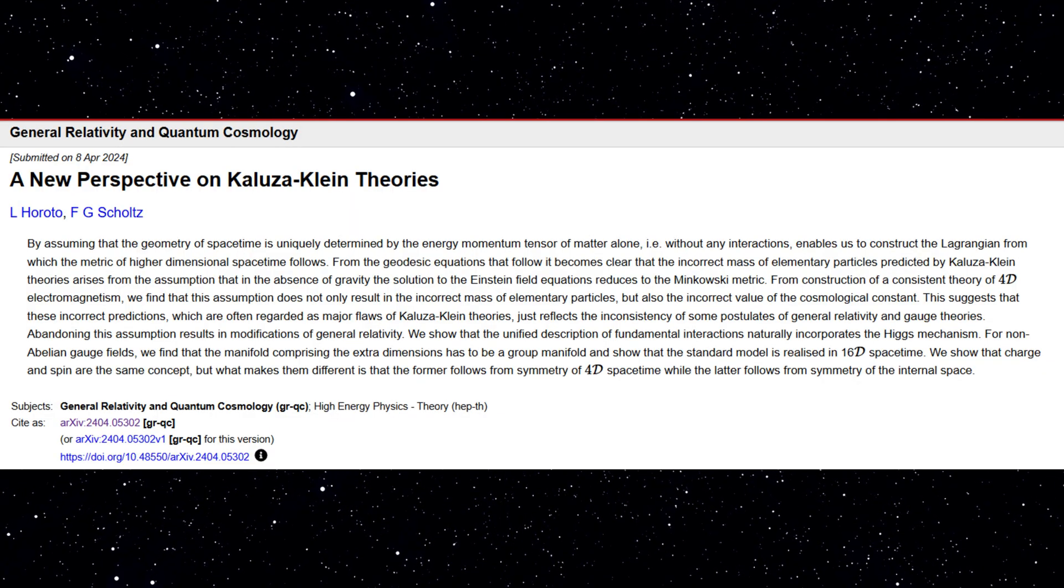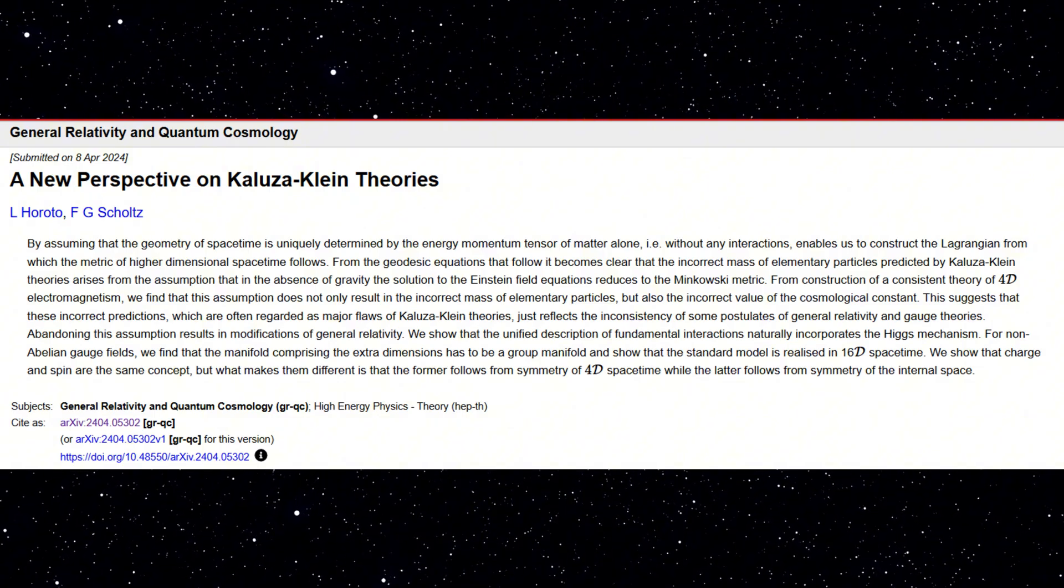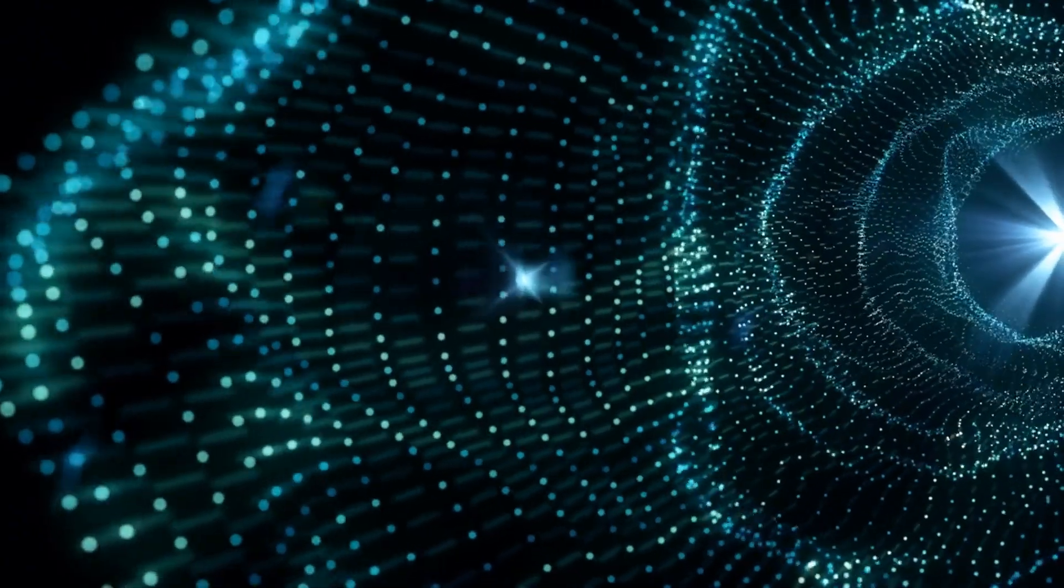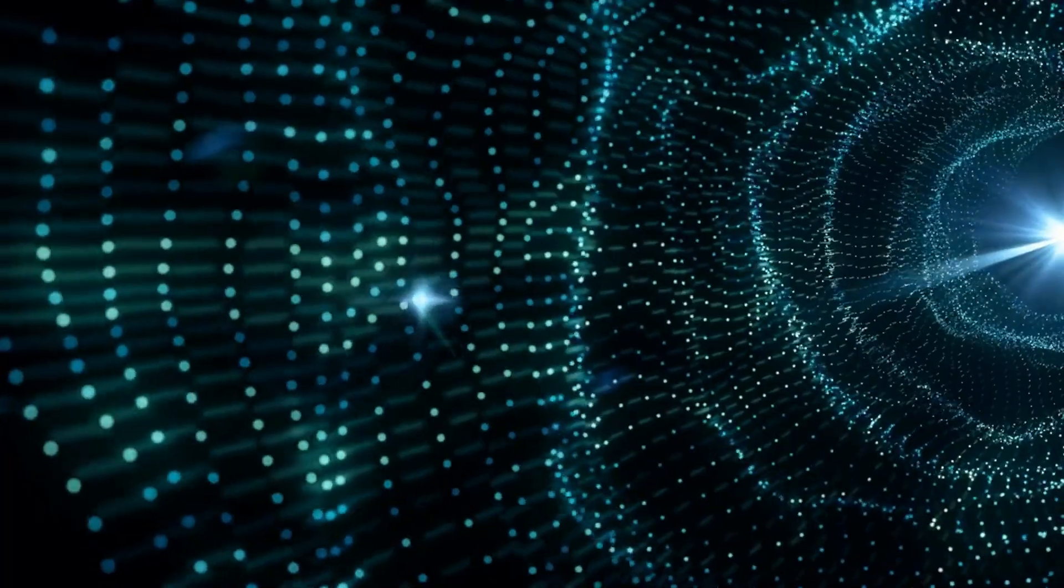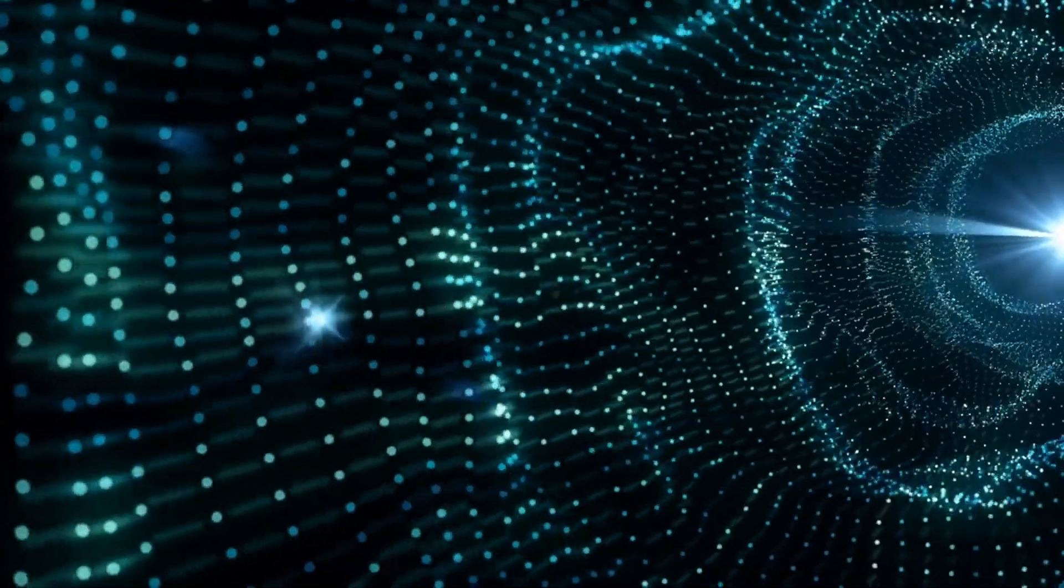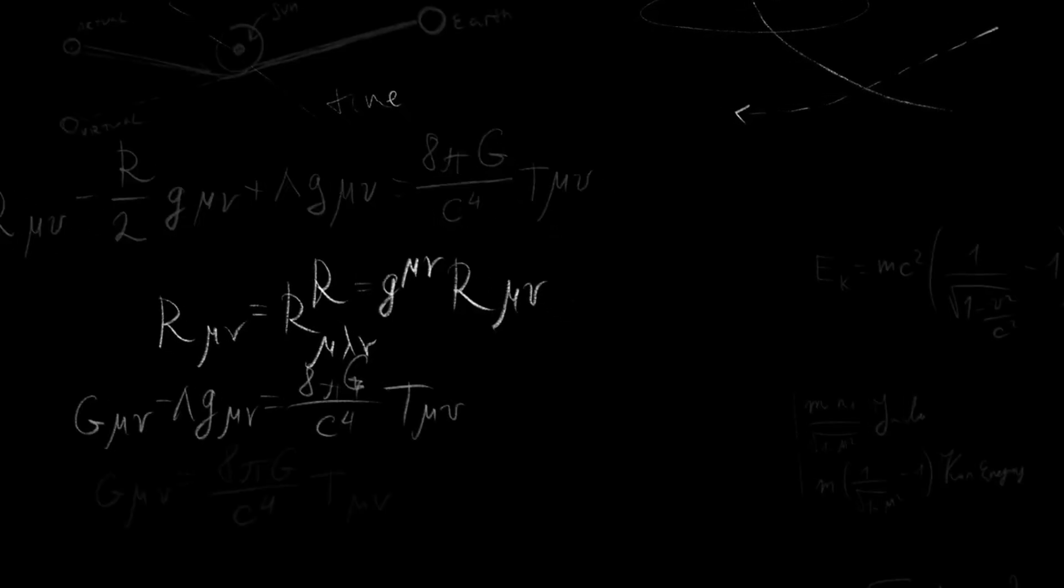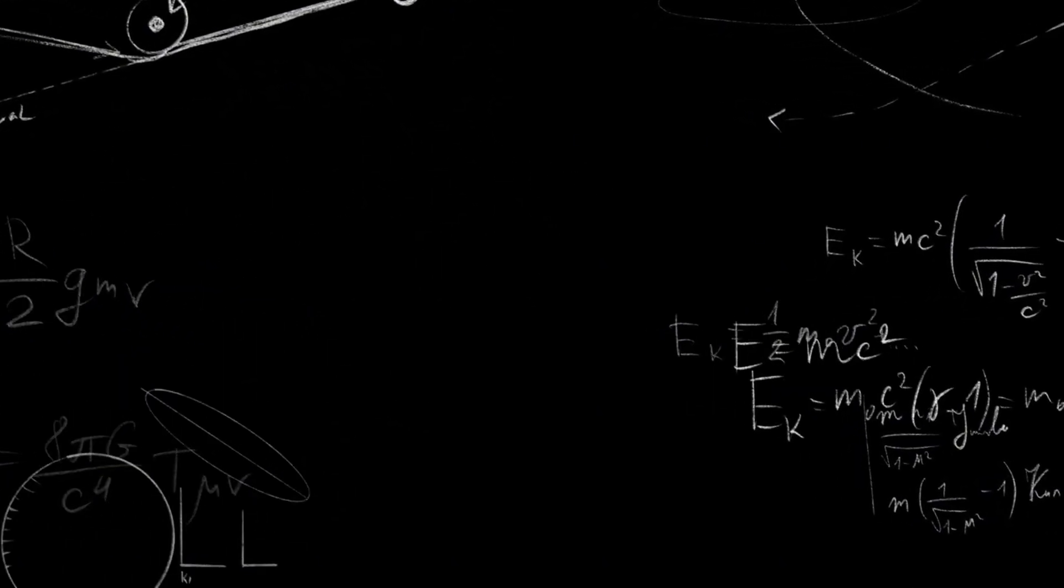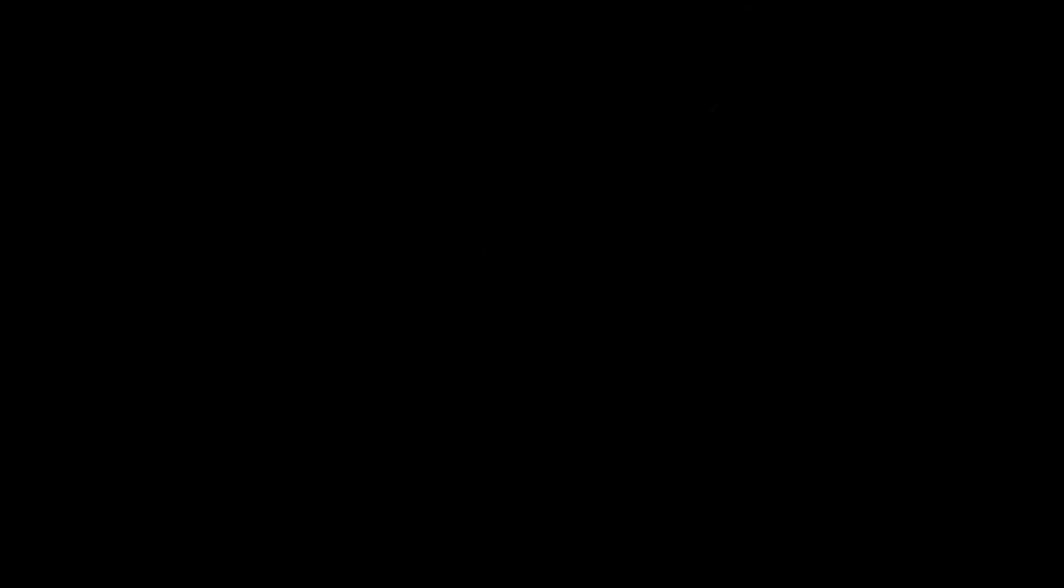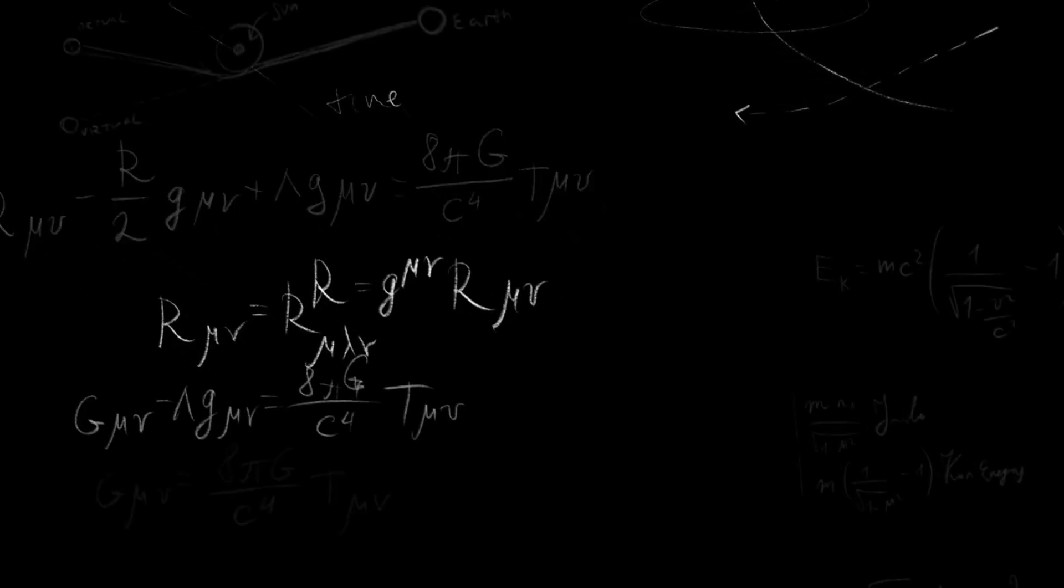The title of the paper is On a New Perspective to Kaluza-Klein Theories. Their premise is simple but bold: Kaluza-Klein theory didn't fall short because of its extra dimension. It fell short because we made the wrong assumptions about how to apply general relativity and gauge theory in higher dimensional spaces.